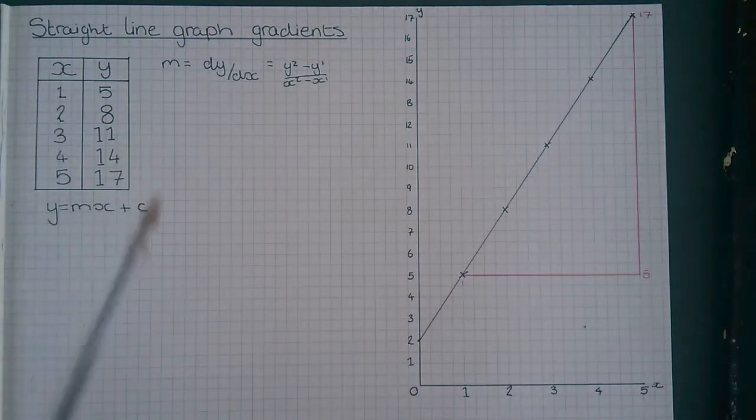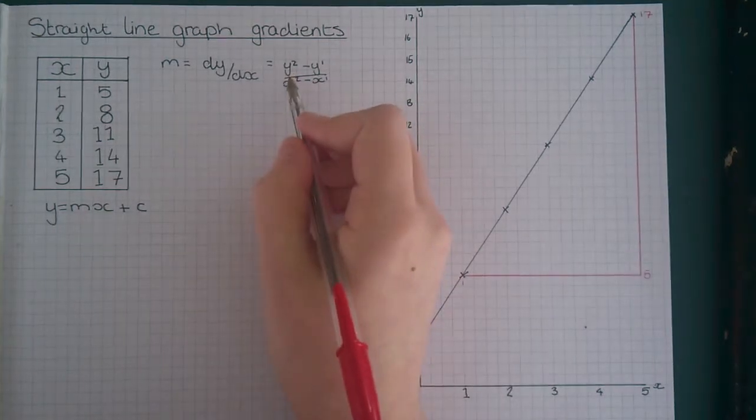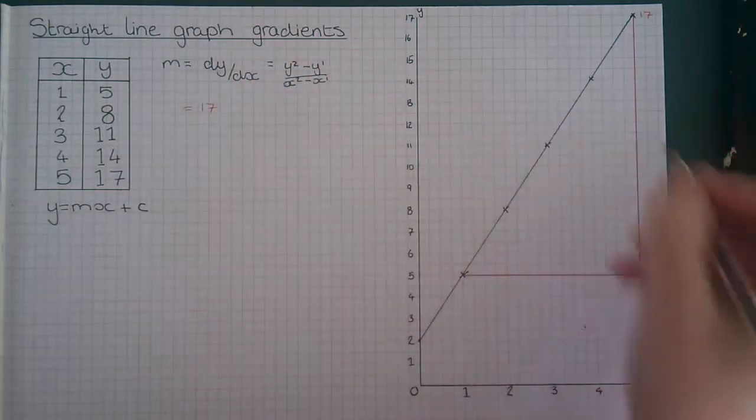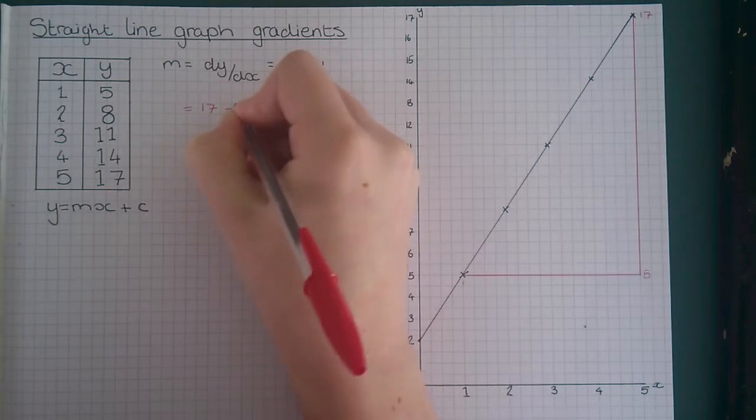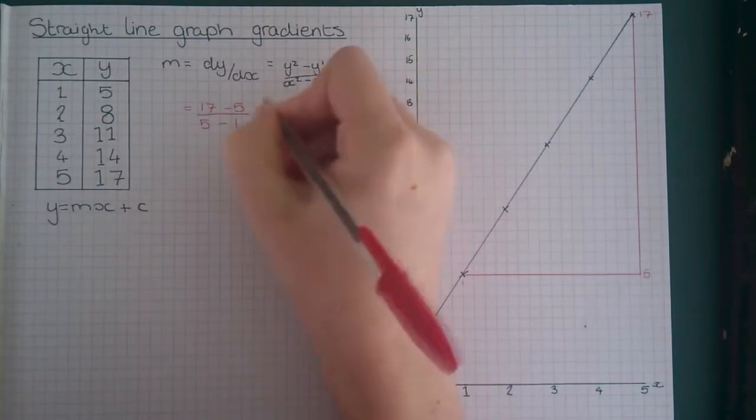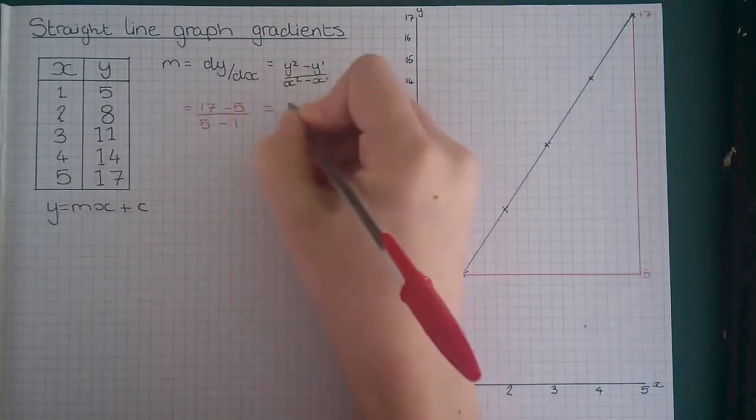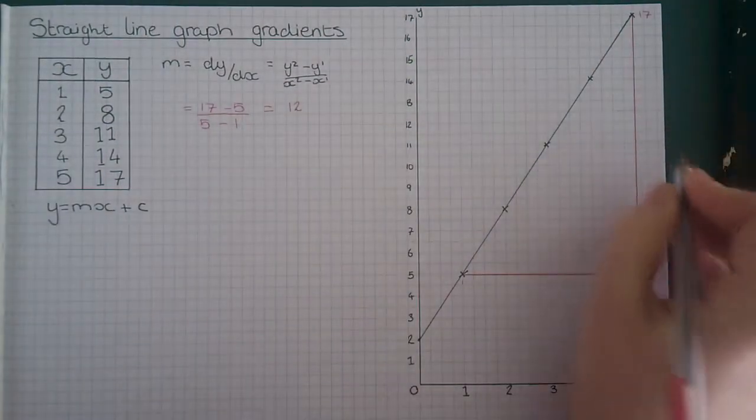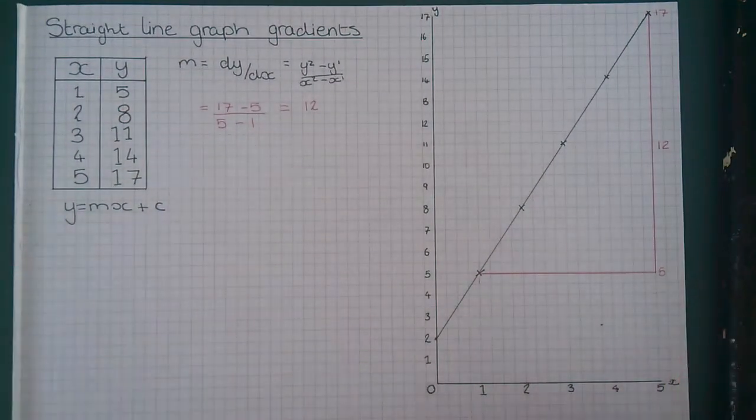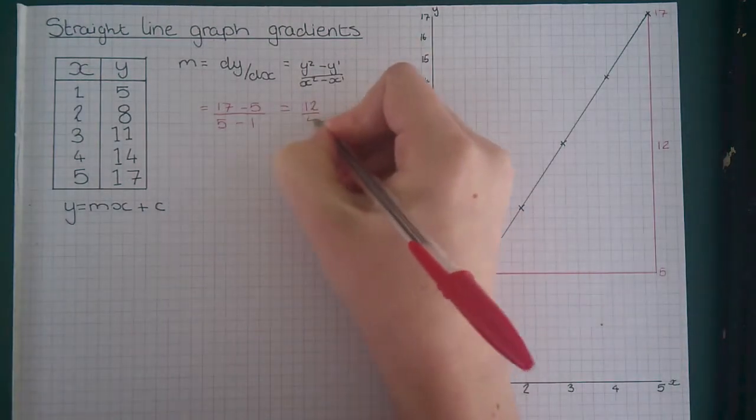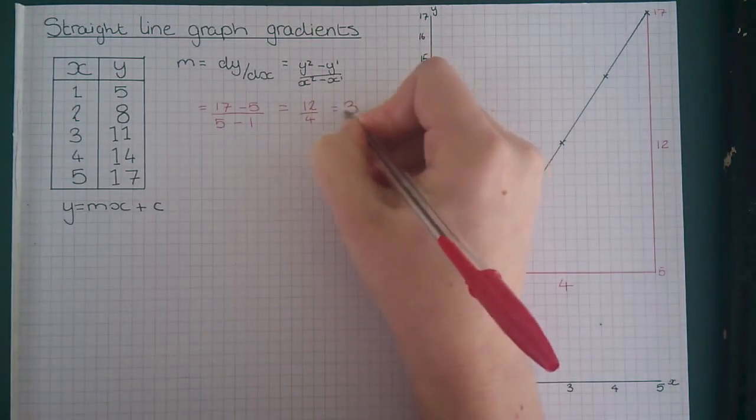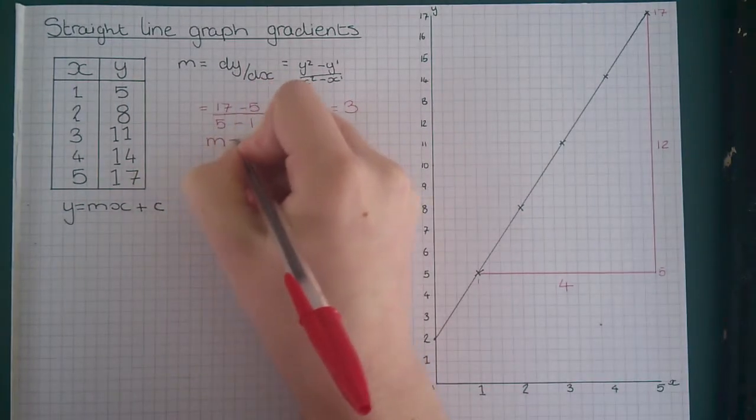Now we need to put these numbers into our equation. So y2 is 17, y1 is 5, x2 is 5 and x1 is 1. 17 minus 5 is 12, which means that this distance here is 12. 5 minus 1 is 4, which means this distance here is 4. 12 divided by 4 equals 3. Therefore, m equals 3.